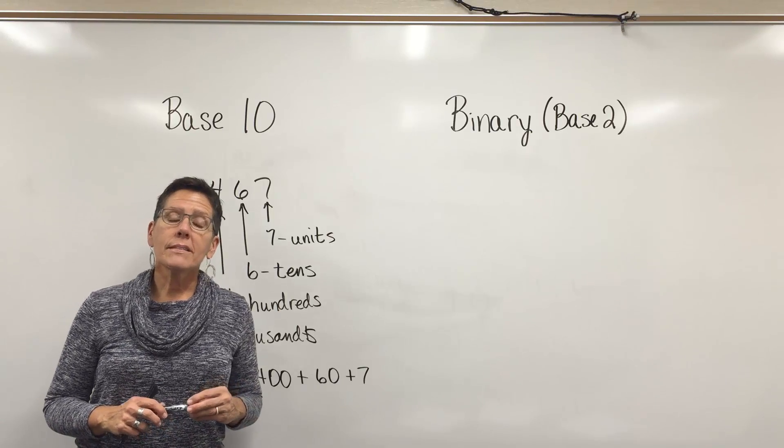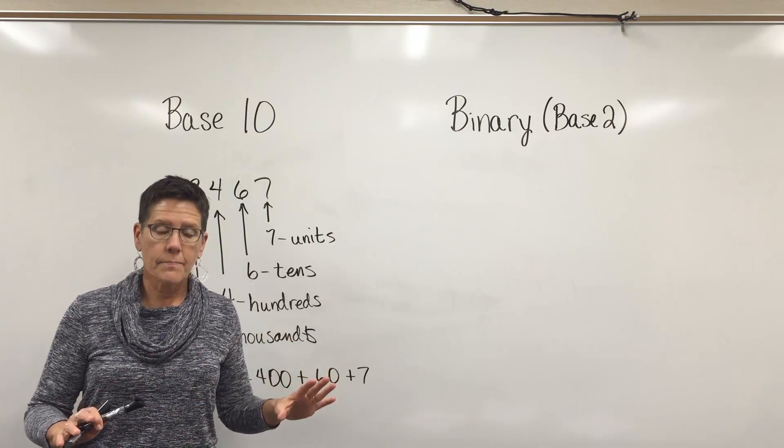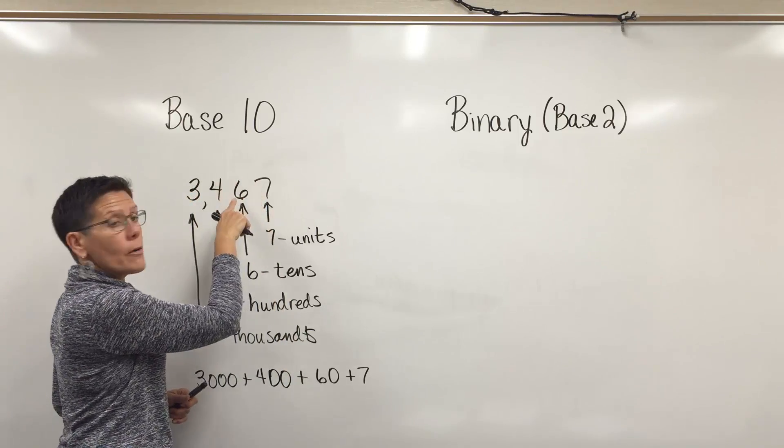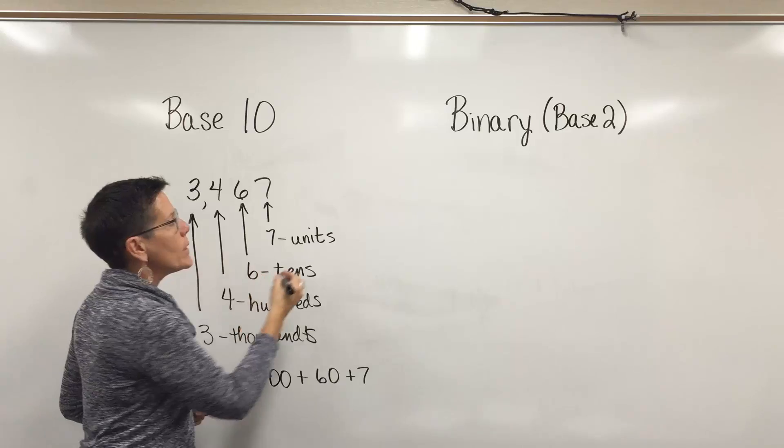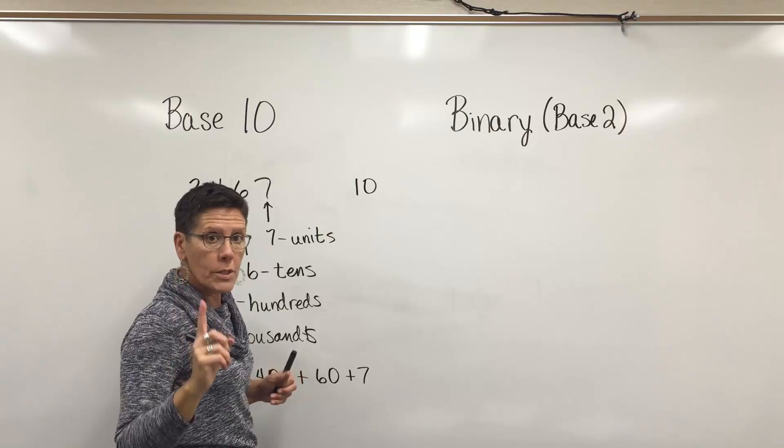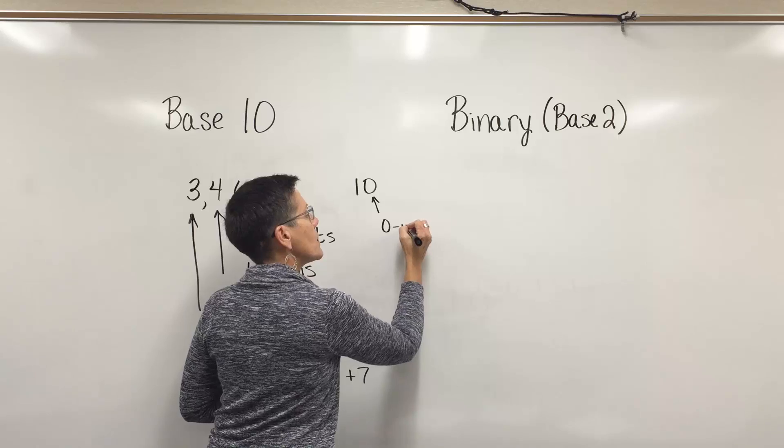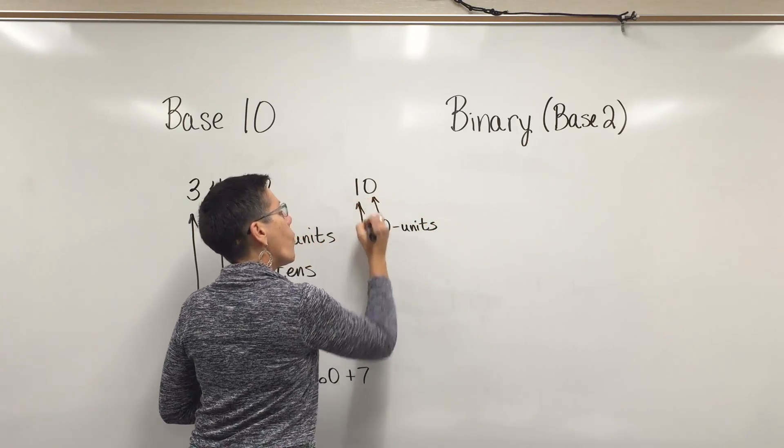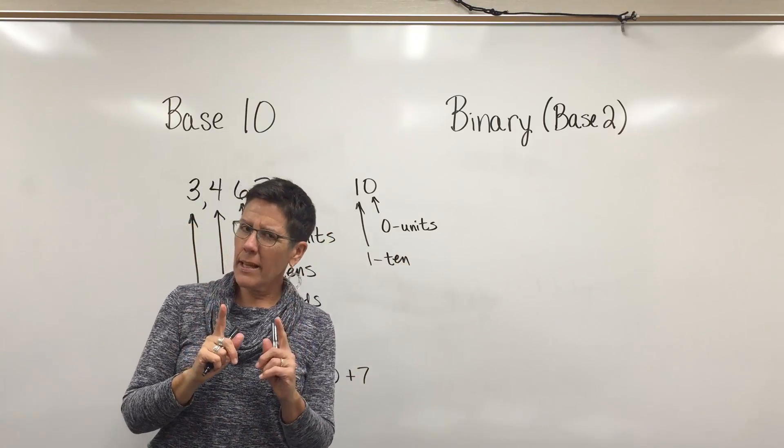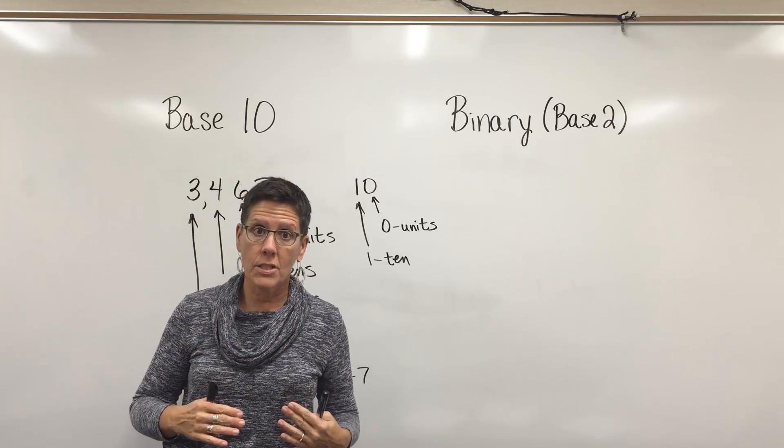The base 10 numbering system uses the digits zero through nine. That's it. When you get beyond a nine in the units position, you move over to the tens position. We don't call the number 10 a single number. We only use zeros through nines. We call the number 10 zero units and one ten. Again, base 10 numbering system, we use the digits below that, the digits zero through nine.